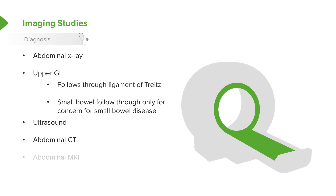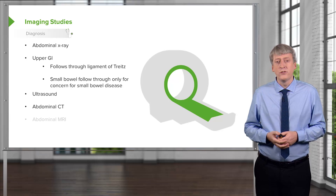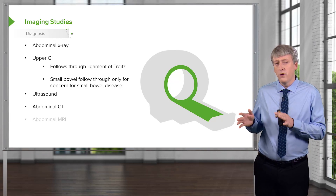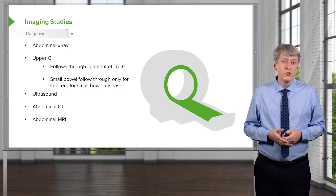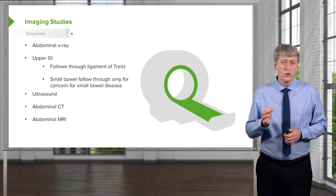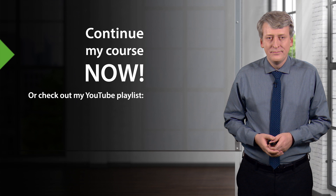The abdominal CT scan is a very useful test when we're worried about intra-abdominal pathology. However, there's quite a bit of radiation risk in children — young children have more mitosis and are at greater risk for developing cancer down the line. As a result, most centers are moving away from abdominal CT and more towards ultrasound. Abdominal MRI is an evolving tool and is particularly used for inflammatory bowel disease to assess the small bowel in children.